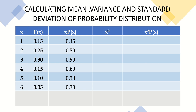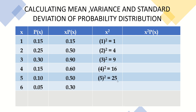Next, we compute x squared: 1² = 1; 2² = 4; 3² = 9; 4² = 16; 5² = 25; and 6² = 36.